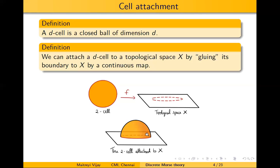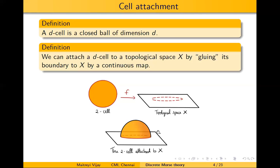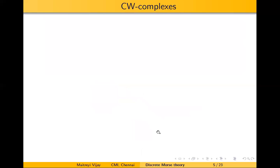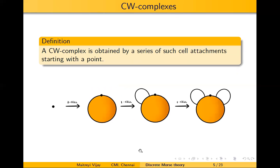A CW complex is just a series of cell attachments, except you have to start with a point — a zero cell. For instance, you can take a zero cell and attach a two-cell to it, in which case you will get a hollow sphere. Then you attach one cell and another one cell and you get this Mickey Mouse figure. All of these are CW complexes.